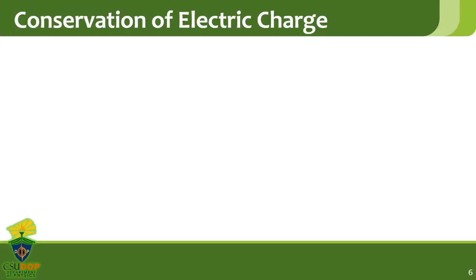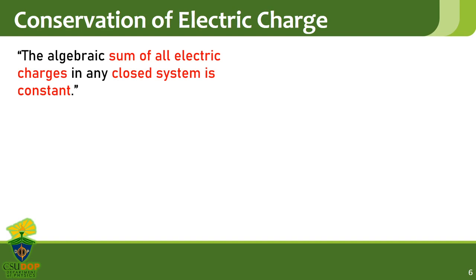Similar to energy, the sum of all the electric charges in a closed system must be constant. This means that if an atom in a neutrally charged material loses an electron, that atom becomes positive, while the atom receiving the electron becomes negative. However, the total charge of the material still remains neutral.